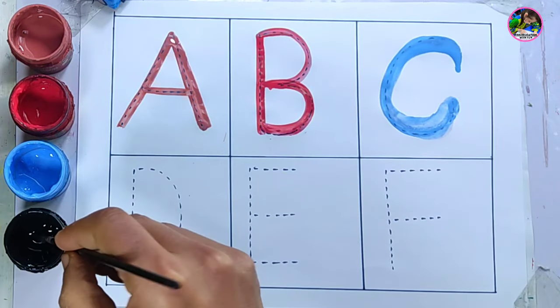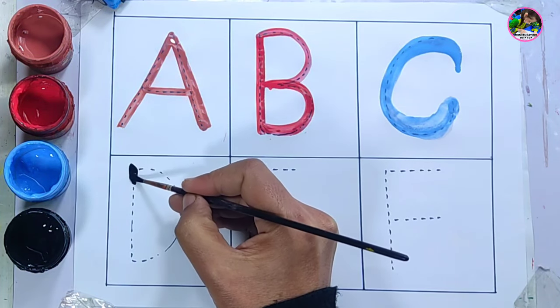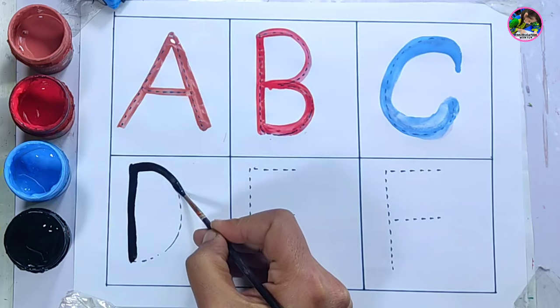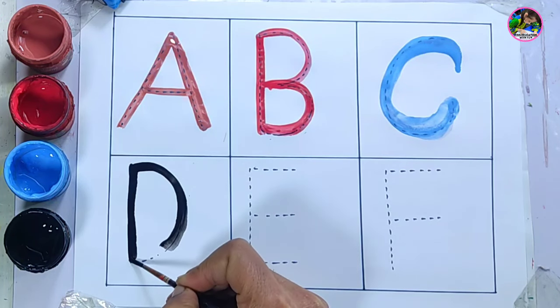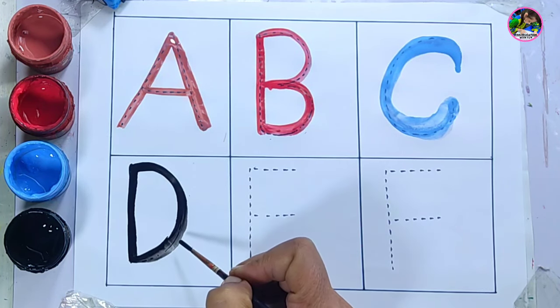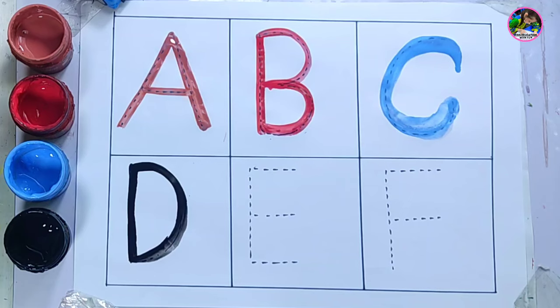Black color, letter D. This is letter D. What is it, children? Letter D. D is for duck. Duck maana battakh. D is for duck.